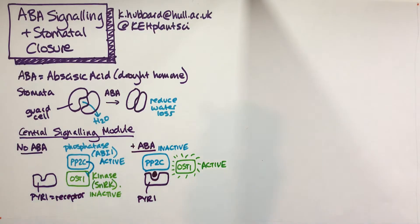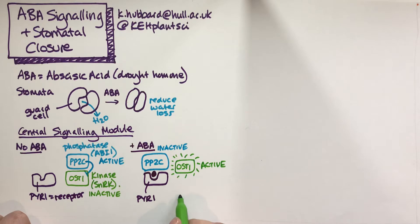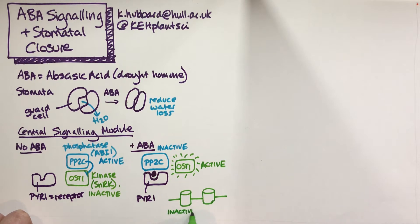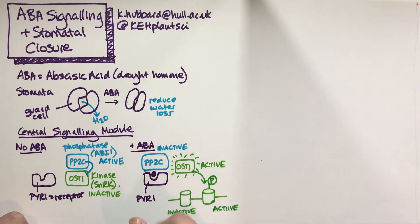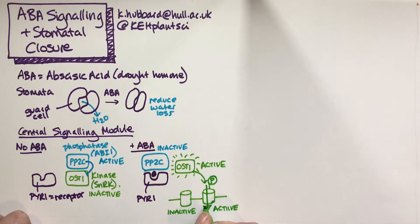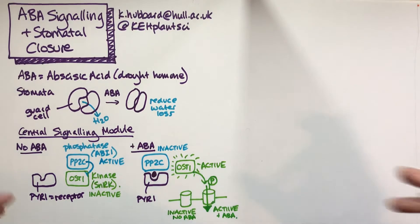OST1 can go and activate other proteins. For example, if there's an ion channel at the plasma membrane, OST1, which is a kinase, will add a phosphate group to the ion channel that activates it. This means ions can start to go through the channel. In the absence of ABA it would be inactive; with ABA that ion channel starts to get activated. That's how the signaling works in terms of the core proteins together.